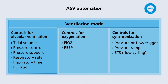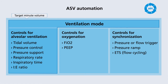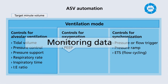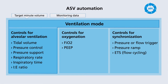ASV requires two key inputs for its function. The first is target minute volume, which must be defined by the operator. The second is monitoring data. With the inputs received, ASV automatically adjusts the ventilator settings in terms of tidal volume, respiratory rate, and inspiratory time. The adjustments will be done after every breath, if needed.